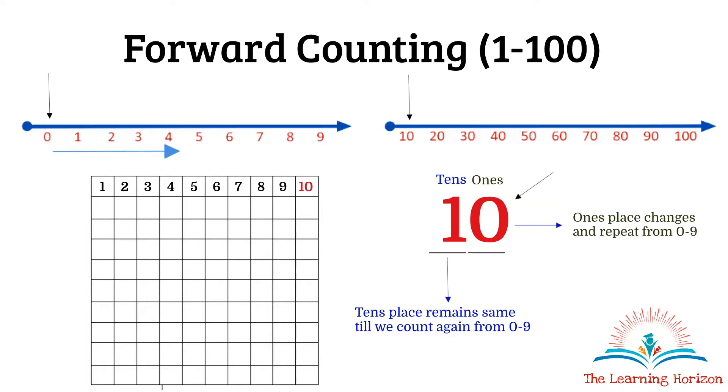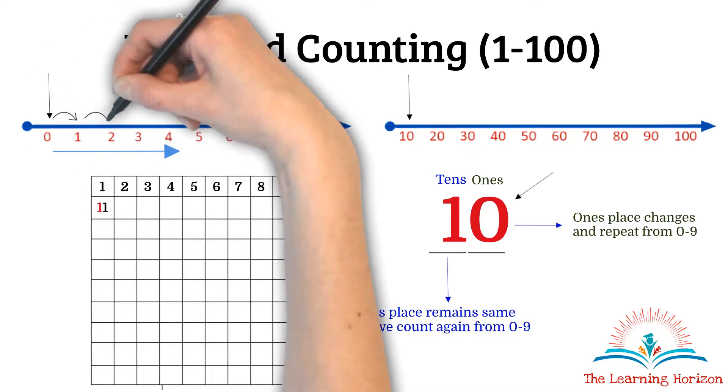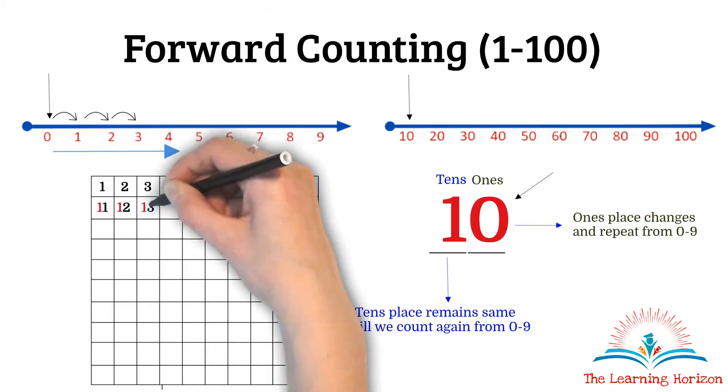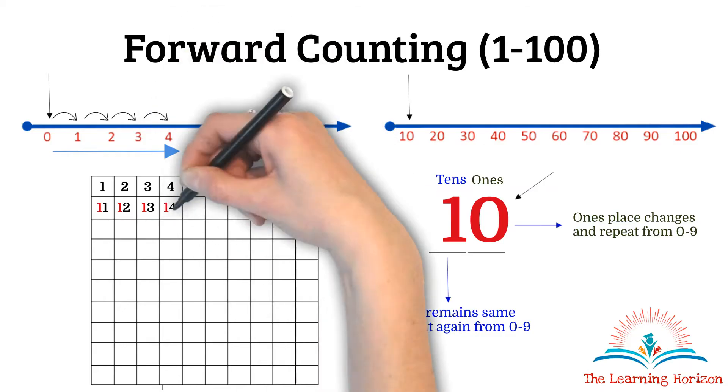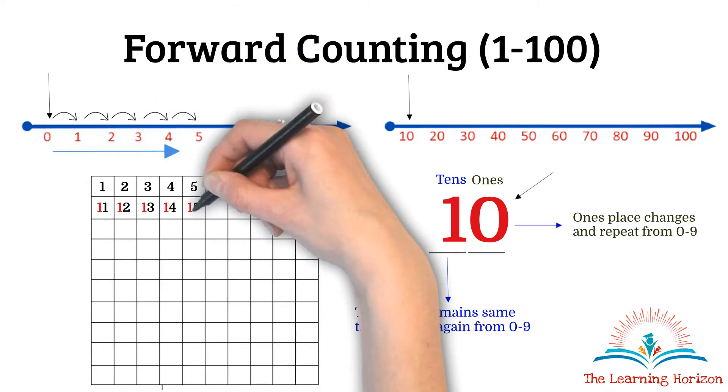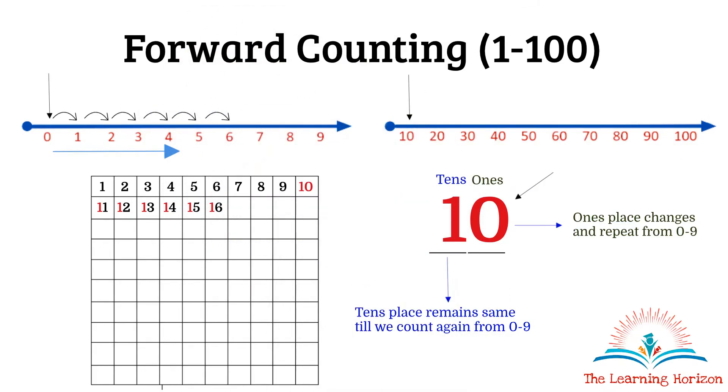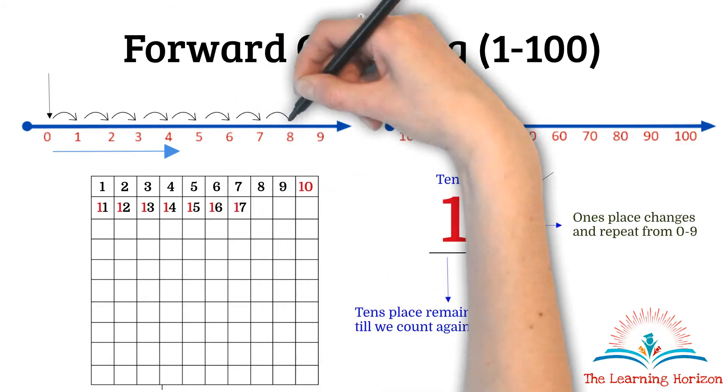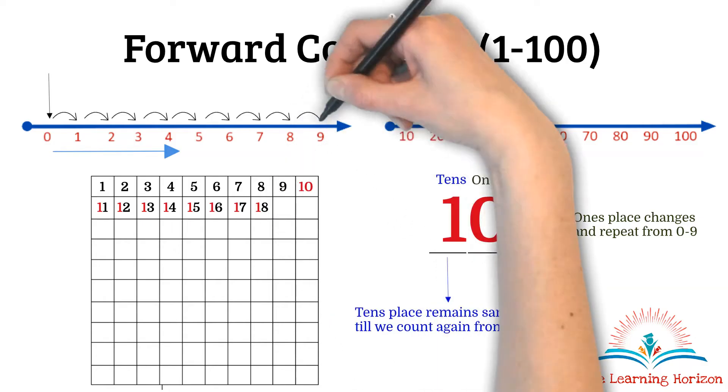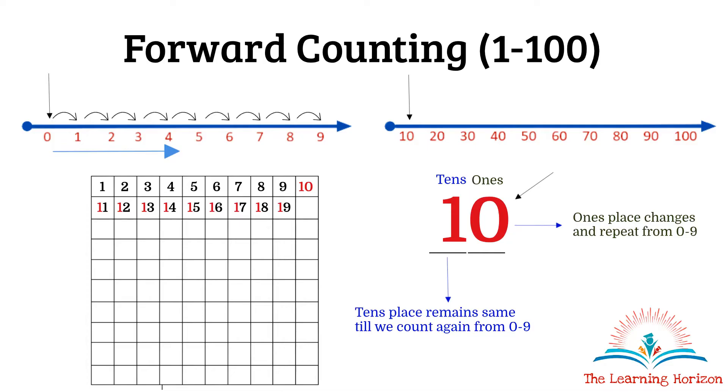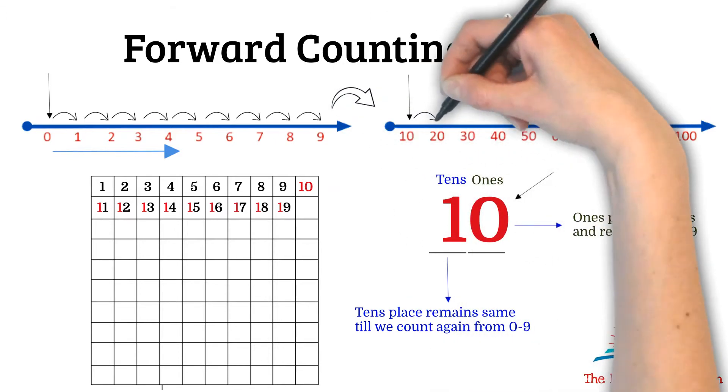Remember this place remains same and only this place which is the ones place changes and follows the order from 0 to 9: that is 11, 12, 13, 14, 15, 16, 17, 18, 19. Again we have reached the end of the number line because we don't have any more digits. So we will move on to the next 10 that is 20.